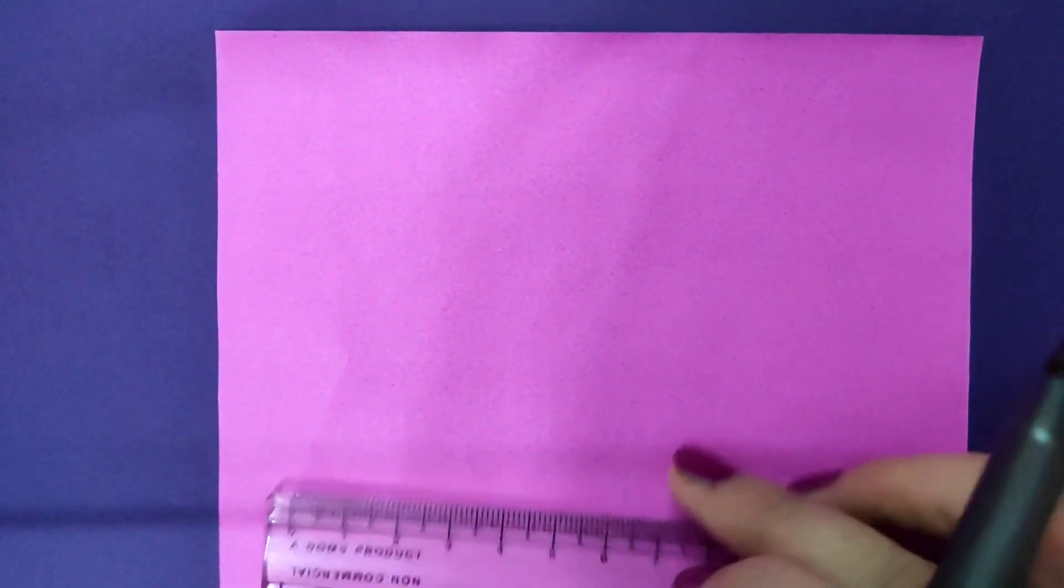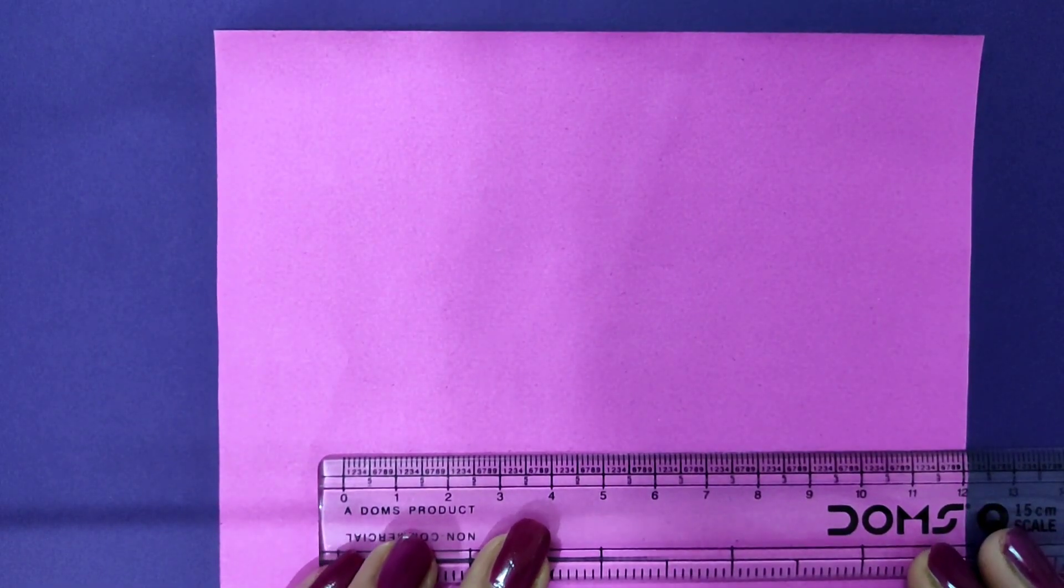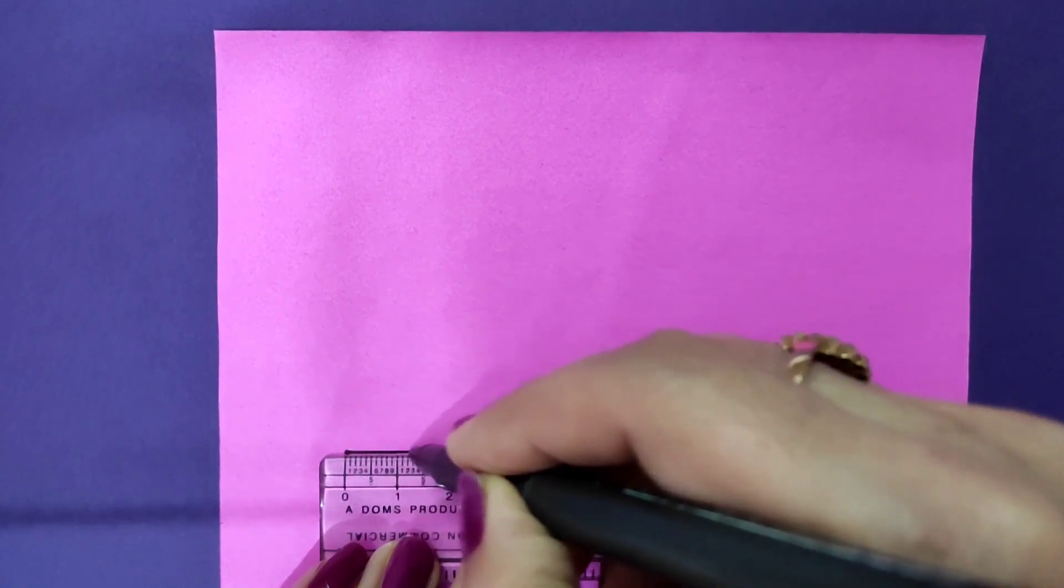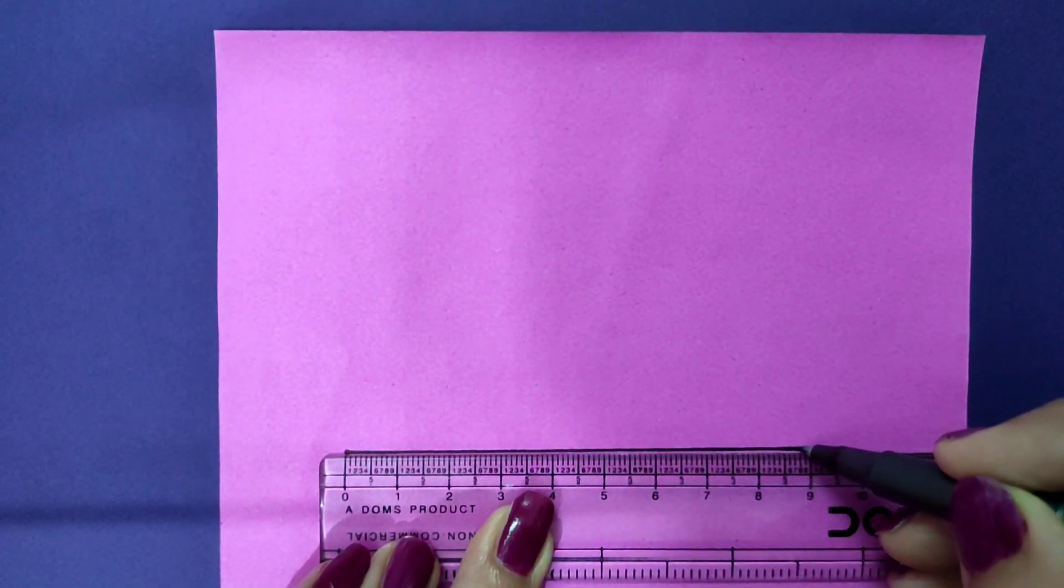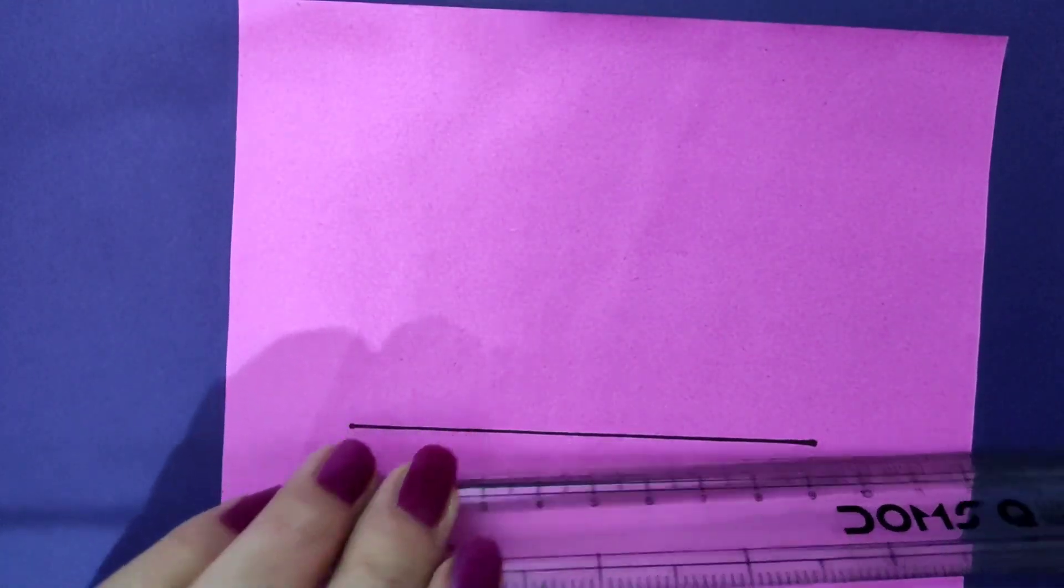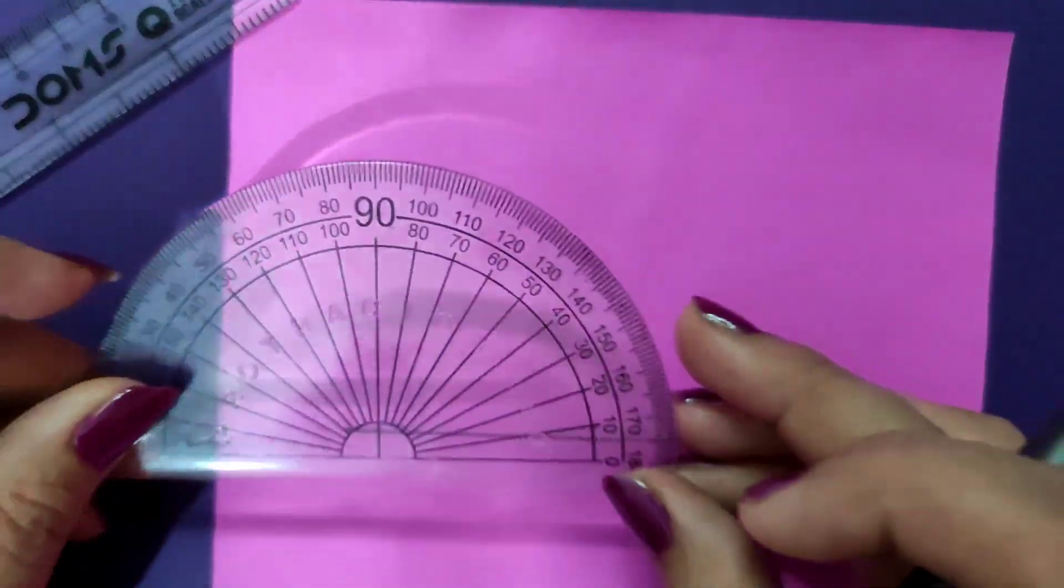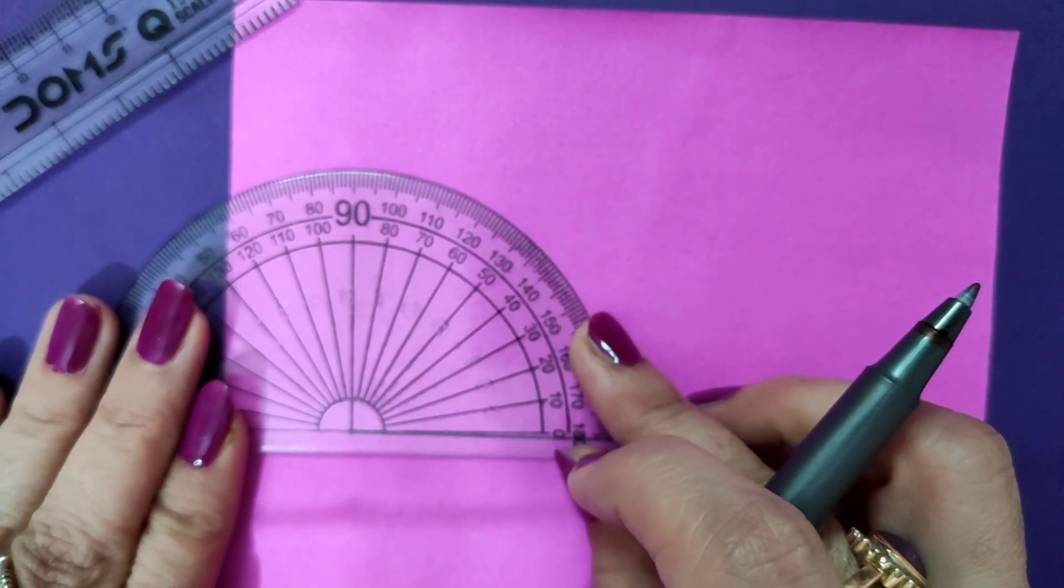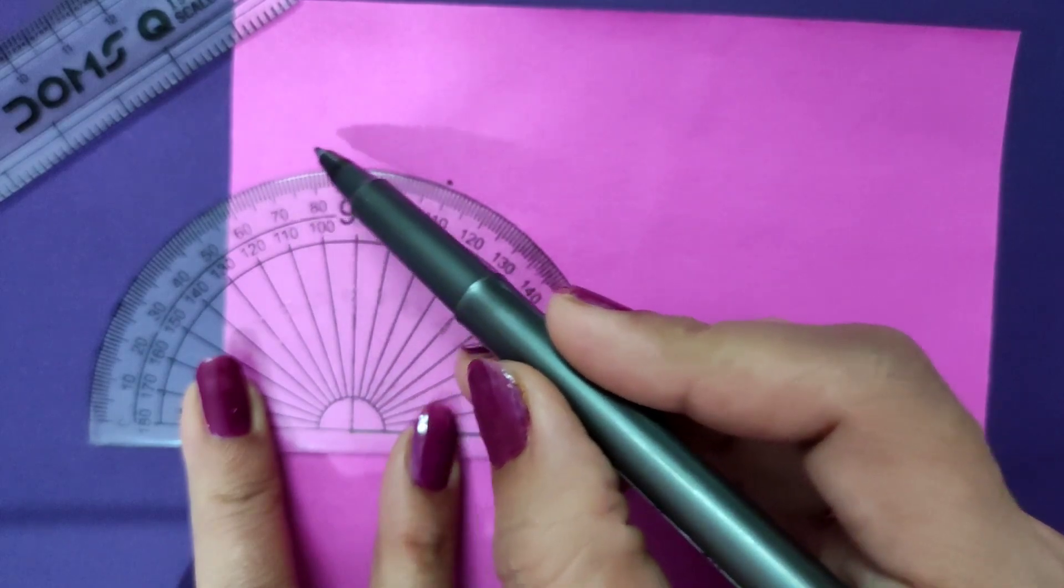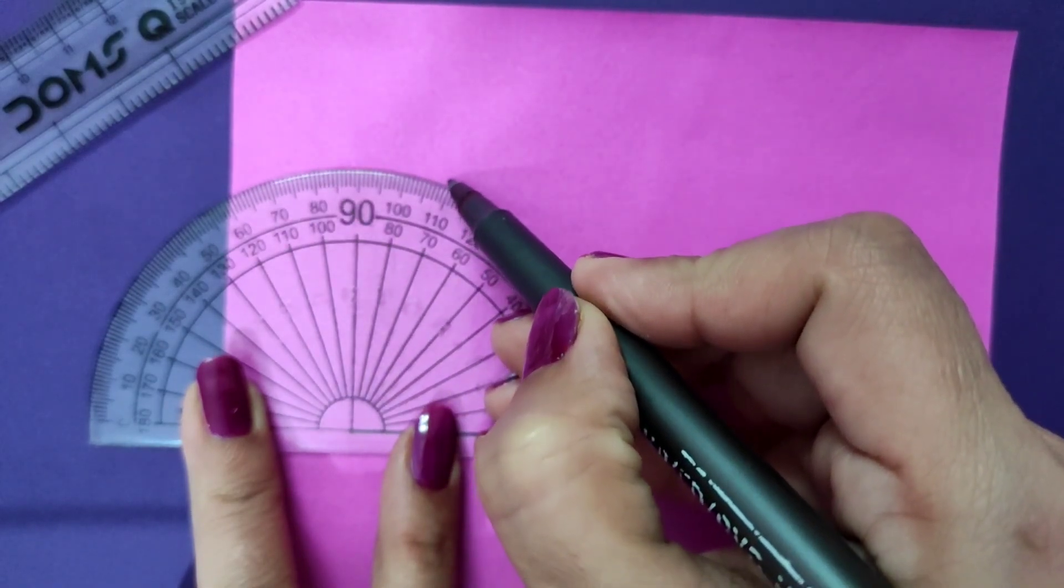My first step is to draw a parallelogram. For that, I draw first of all a 9 cm long line segment. I could have taken any dimensions, I'm just taking 9 cm. Then I take the protractor and put it on one of the endpoints. I start counting from this side, go in the clockwise direction and mark 110 degrees from here.